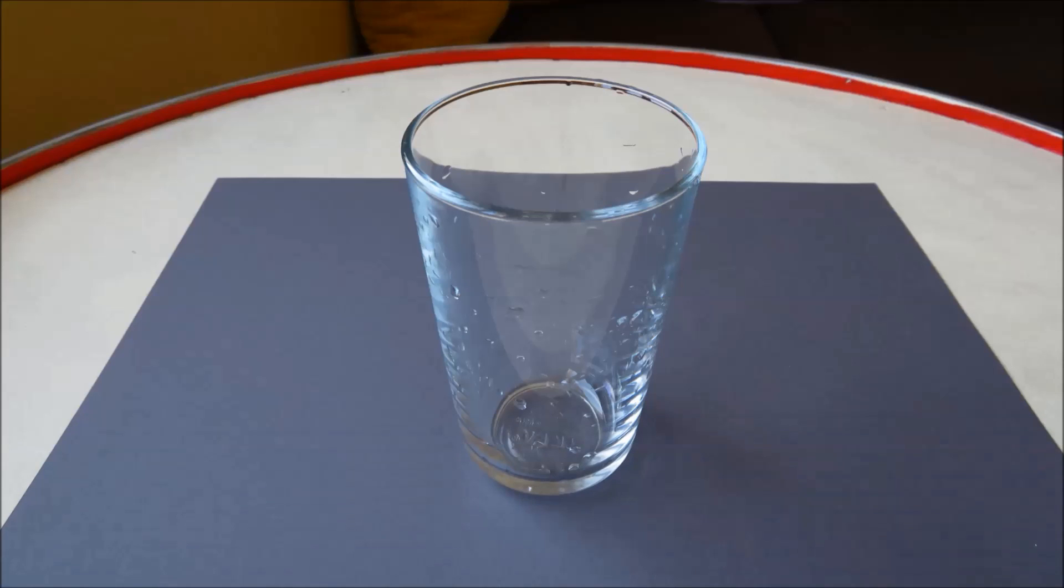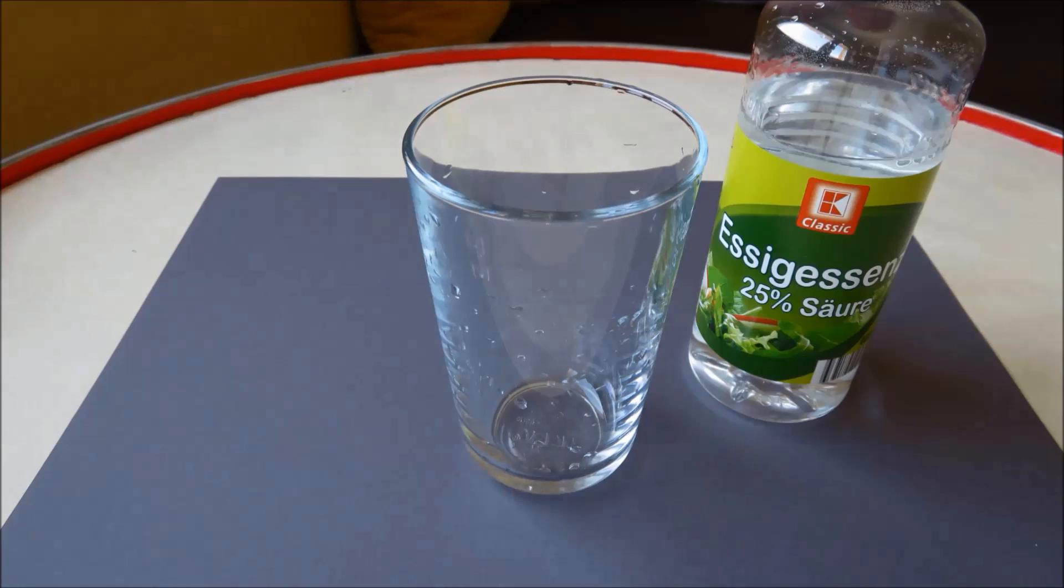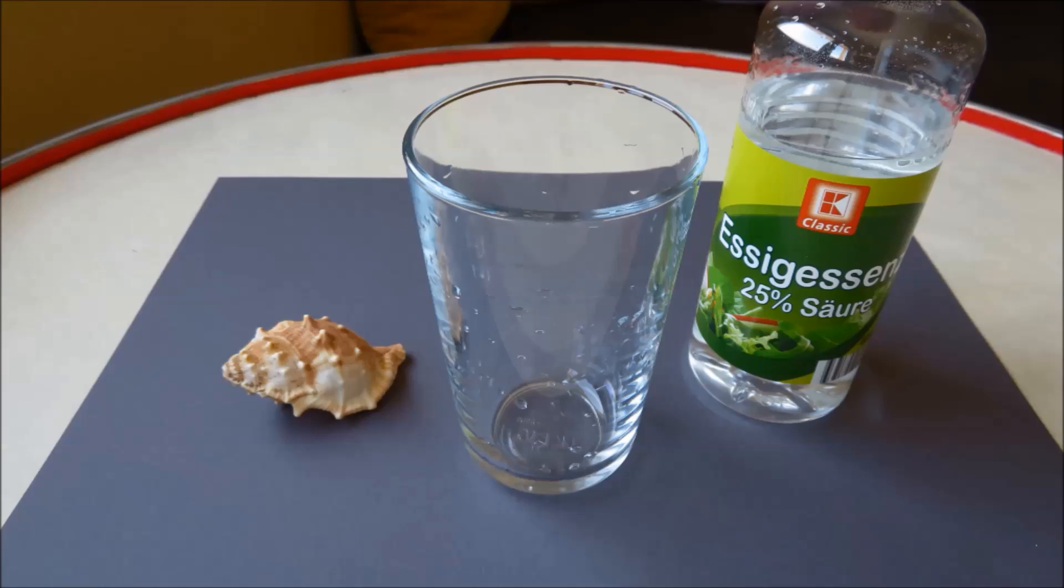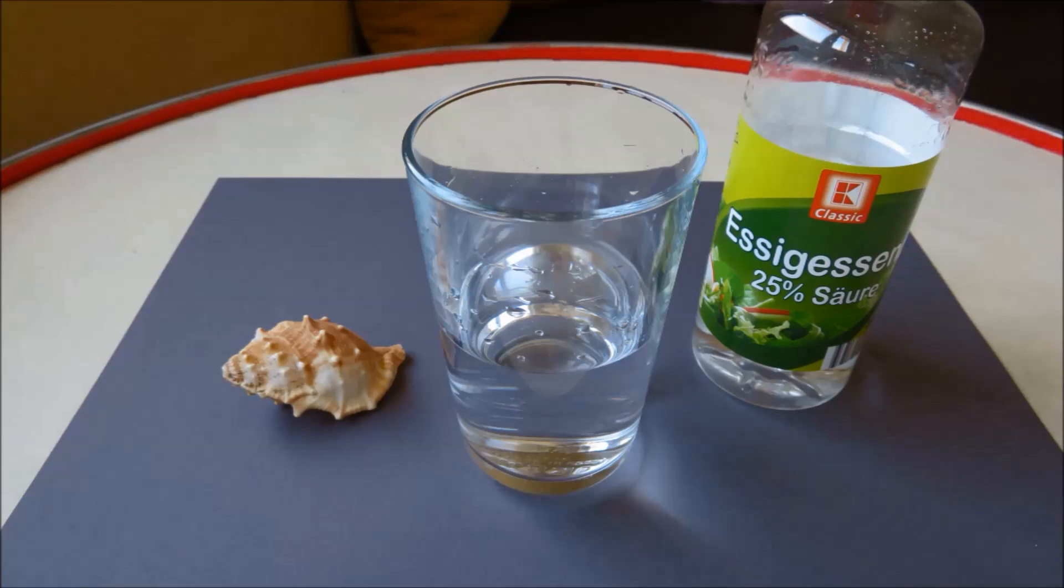Have you ever done that? No? Then let's do it together. So what do we need? First of all, a clean glass. Secondly, of course we need the vinegar. Or in my case I took a special one with 25% acetic acid. And finally we need a shell that fits into the glass. Then we fill the glass with the vinegar and put the shell inside.